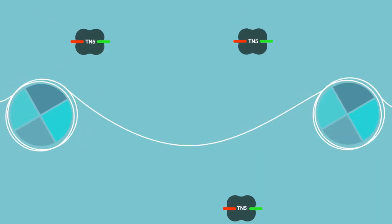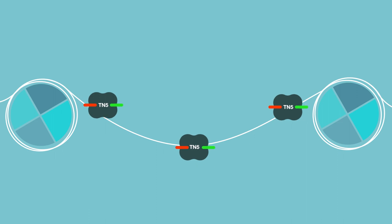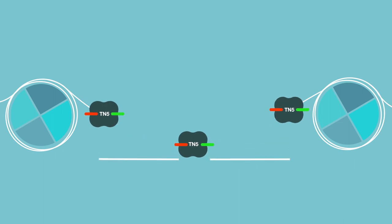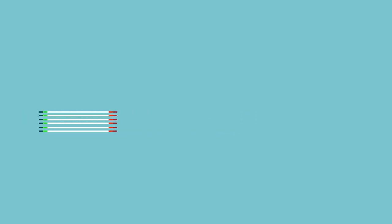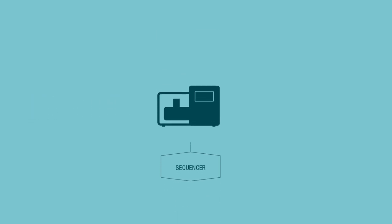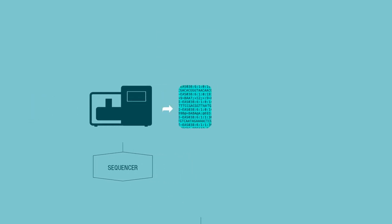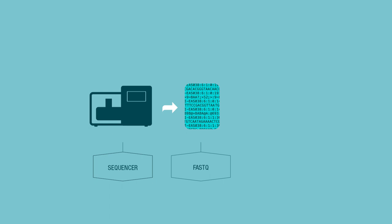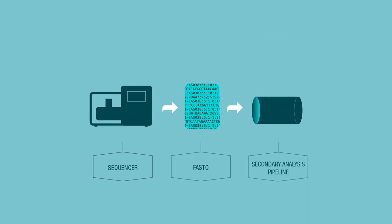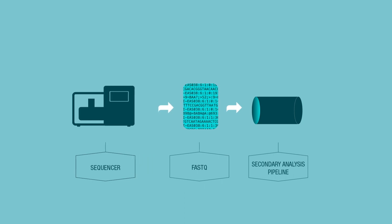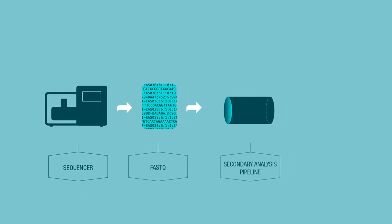The way we do that is we use this enzyme called Tn5 transposase, which will bind open chromatin and also insert DNA sequencing adapters to tag regions of the genome that are open. After that we remove the proteins from the sample, PCR amplify, and create a DNA sequencing library that we put on an Illumina sequencer. We then get back sequencing data in FASTQ format, and perform a secondary analysis that defines cells to create a matrix of cells by peaks, where the values represent how open that region of the genome was per cell.